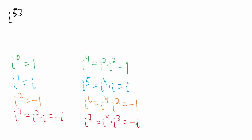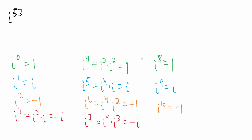That pattern — one, i, negative one, negative i — is going to repeat forever. Continuing: i to the eighth is one, i to the ninth is i, i to the tenth is negative one, and i to the eleventh is negative i.